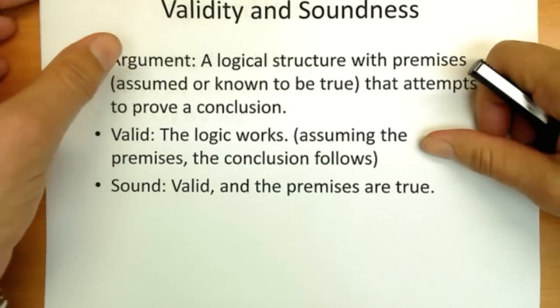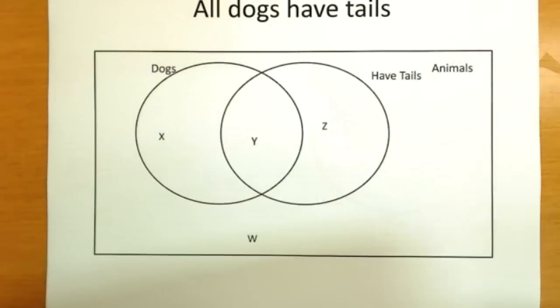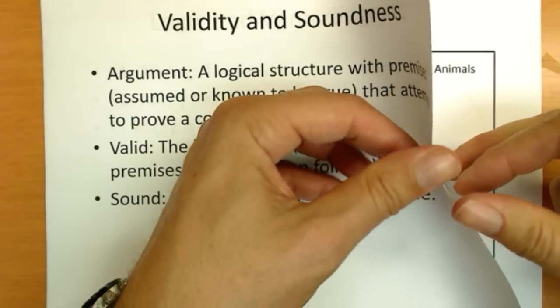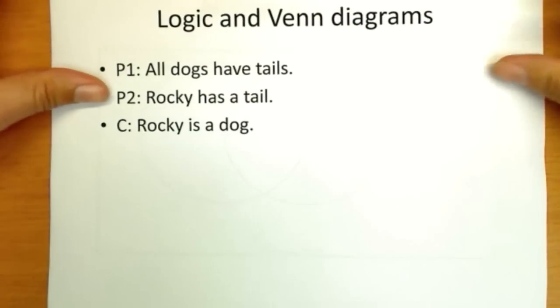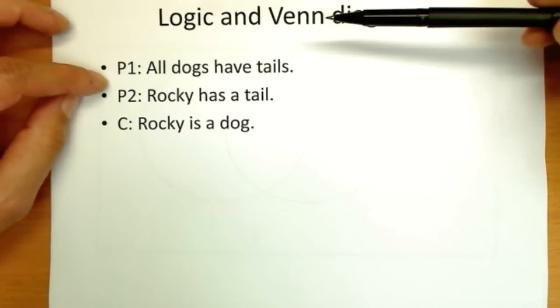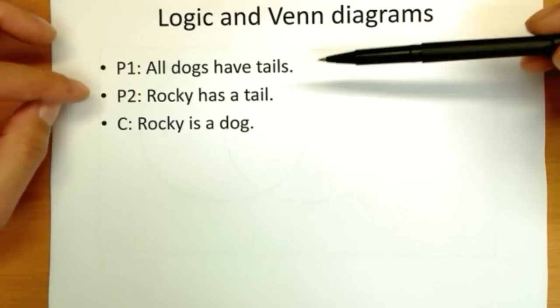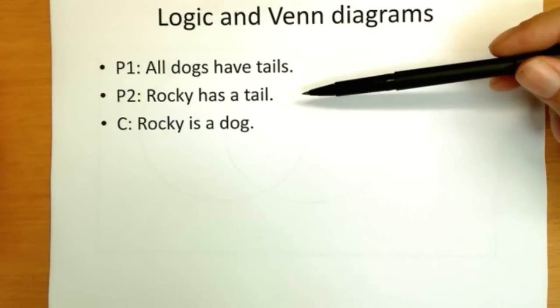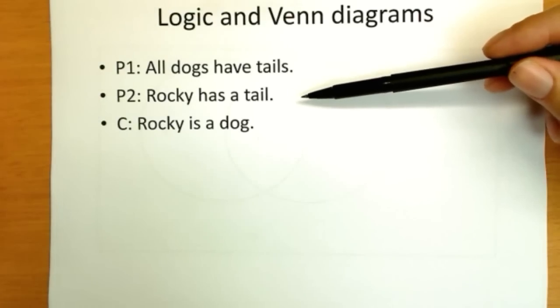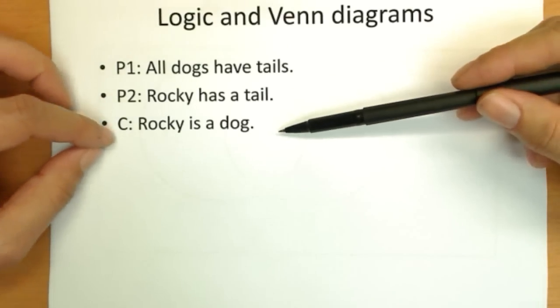So let's give it a simple example to see how this would work. So here is the logical argument we're going to use a Venn diagram to discuss. My first premise, premise one, is that all dogs have tails. Premise two is that Rocky has a tail. And since you don't know Rocky, I will tell you. Rocky has a tail, so you can't argue with premise two. Conclusion, Rocky is a dog.